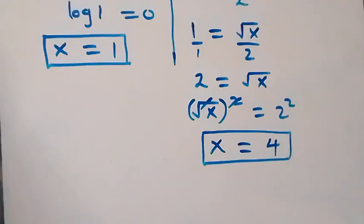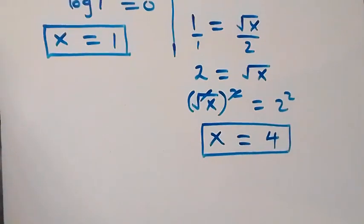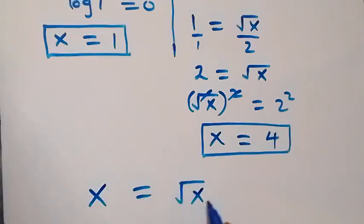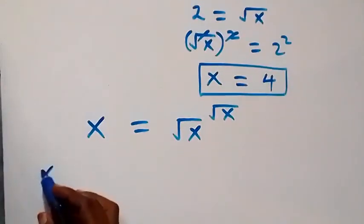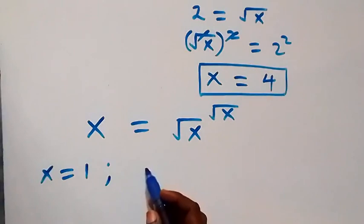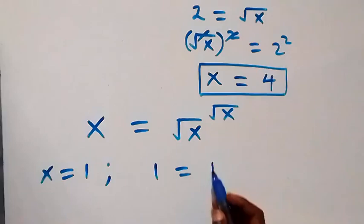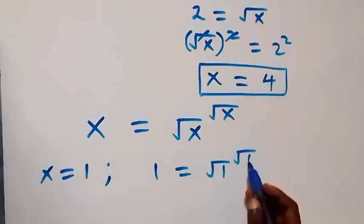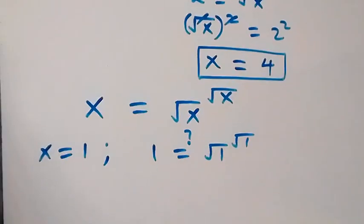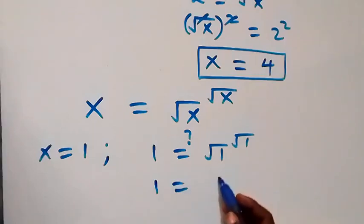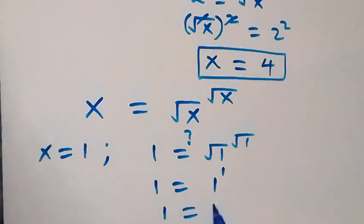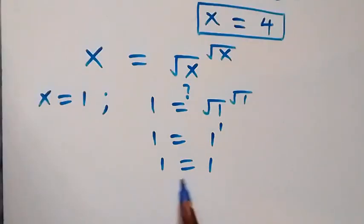Let's verify both solutions in the original equation x equals x raised to power root x. When x equals 1: the right-hand side is root 1 raised to power root 1, which is 1 raised to power 1, equals 1. So left-hand side equals right-hand side, and x equals 1 satisfies the equation.